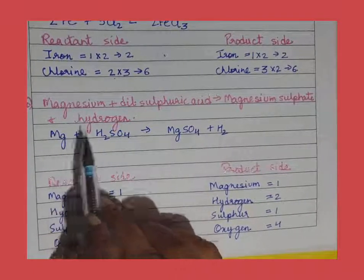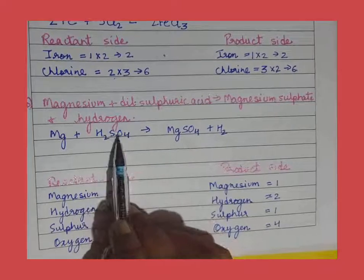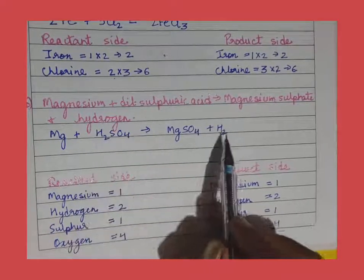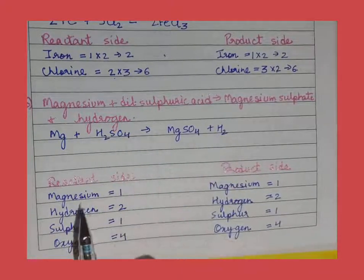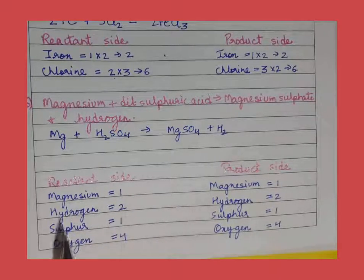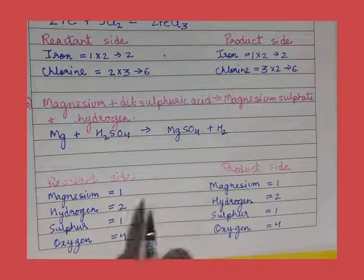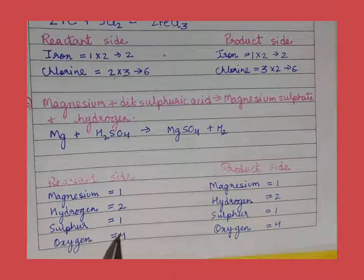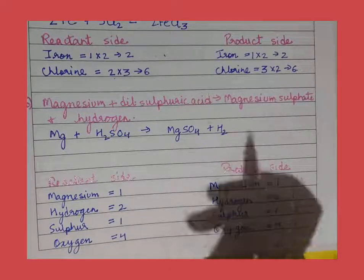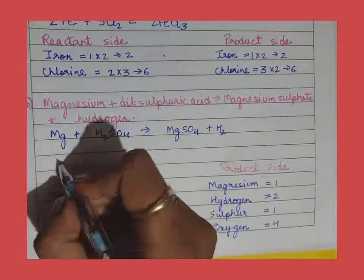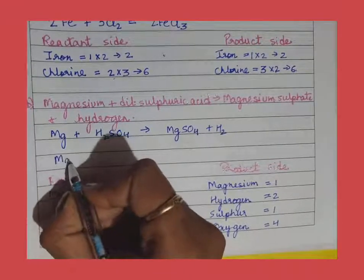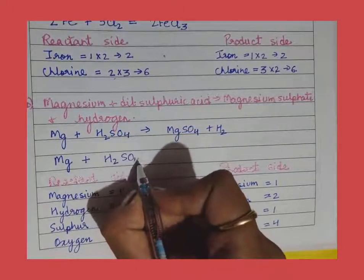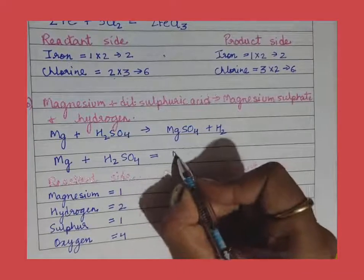The symbol of magnesium is Mg, the formula of sulfuric acid is H₂SO₄, the formula of magnesium sulfate is MgSO₄, and the formula of hydrogen is H₂. Checking atom counts: magnesium is 1 on both sides, hydrogen is 2 on both sides, sulfur is 1 on both sides, and oxygen is 4 on both sides. So the equation is already balanced, and we simply replace the arrow with the sign of equality.